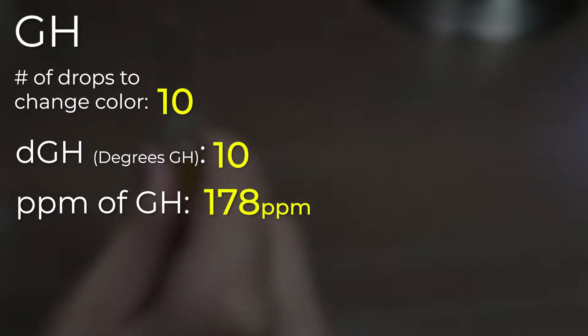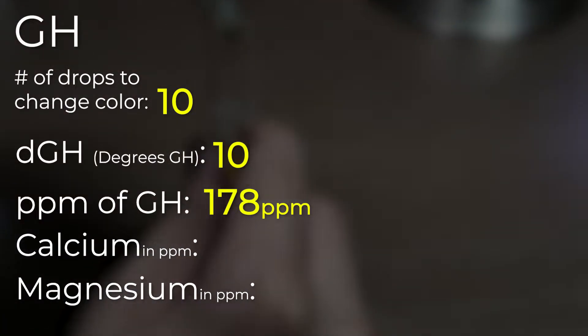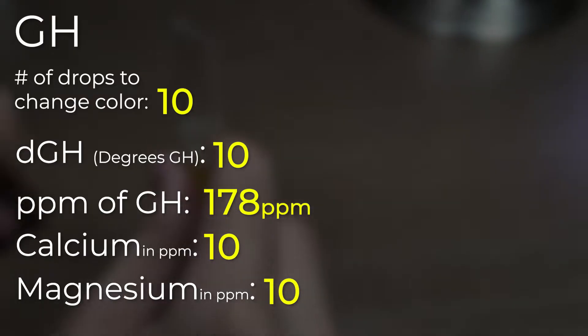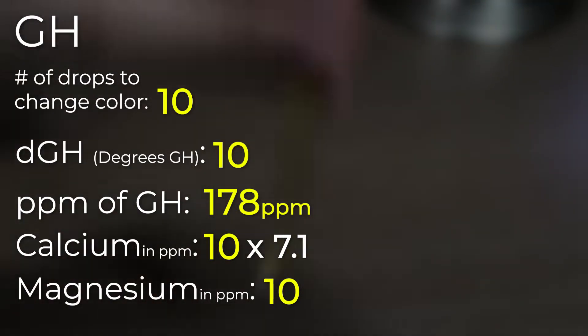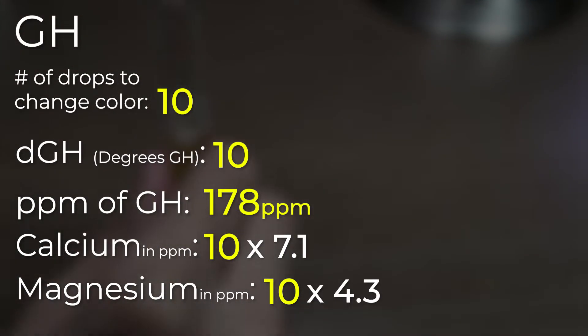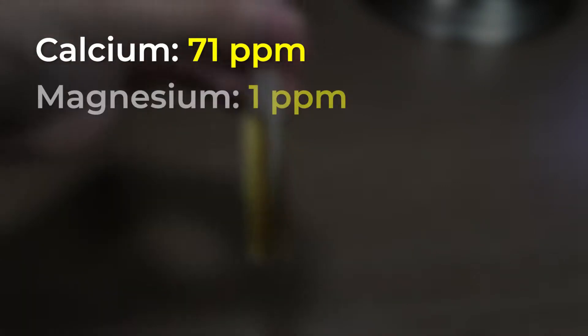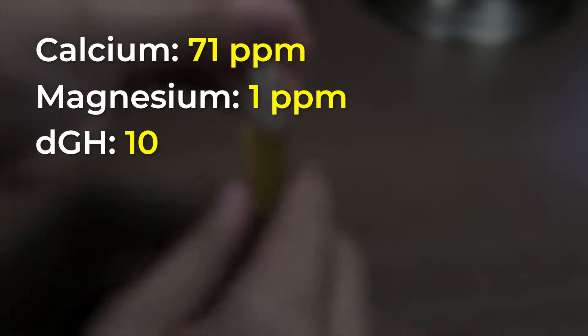Now, if you want the exact calcium and magnesium values, take your degrees GH and multiply it by 7.1 for calcium and 4.3 for magnesium. However, GH should not be used as a direct test for calcium and magnesium. You can have high amounts of calcium and low magnesium and still get a high GH reading.